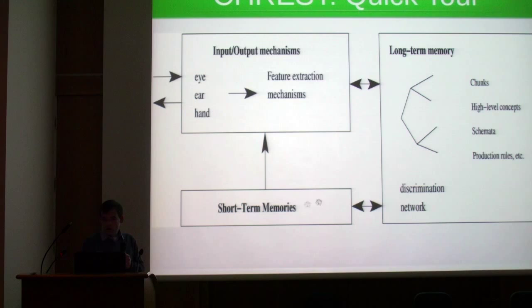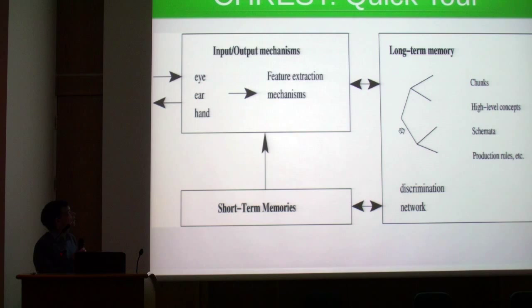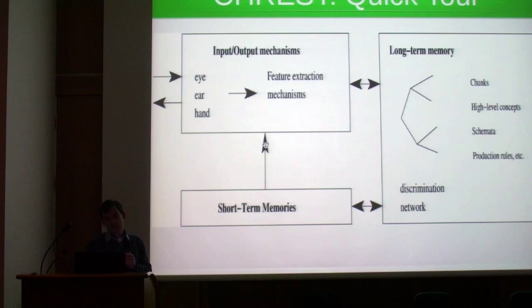On the far right we have a pool of long-term memory pieces of information. We have things that we call chunks, which are familiar patterns, and we can also have production rules and schemata in there. The distinctive feature of CREST is this discrimination network, which essentially acts as an index into the long-term memory. As you see things, they get sorted through the network, retrieved, and pointers to them are placed in short-term memory, which can then affect what you look at next.